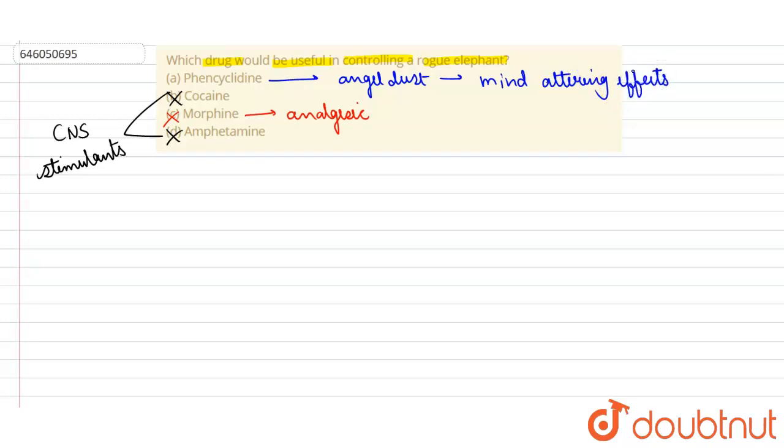Therefore, we can say it has a mind-altering effect. How does it alter the mind? It may majorly cause hallucinations and lead to distorted sight.